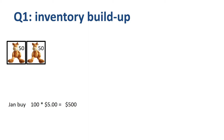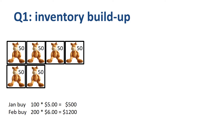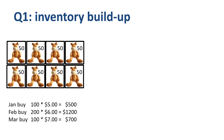In January they buy 100 units, packed in two boxes of 50 units each at $5 per unit. In February, 200 units, four boxes of 50 units at $6 per unit. In March, another 100 units, two boxes of 50 units at $7 per unit. The Q1 ending inventory is 400 units at a total purchase price of $2,400, so on average $6 per unit.